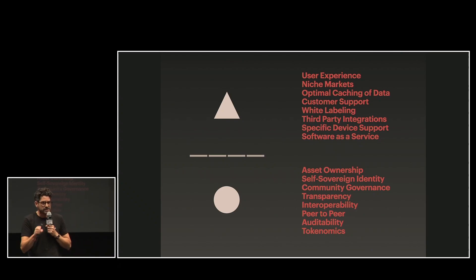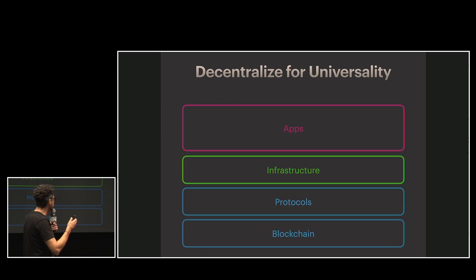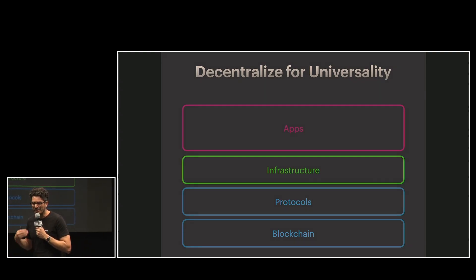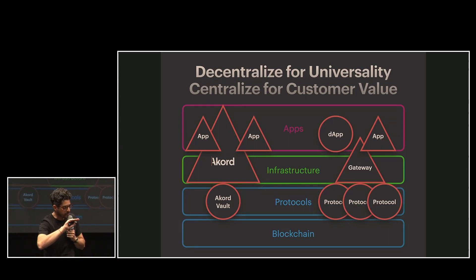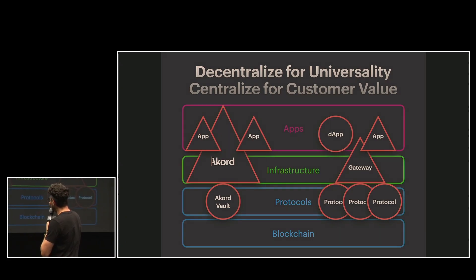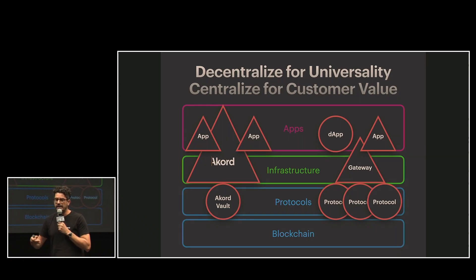We can get into more niche markets by providing more specific solutions. Looking at the stack many projects have presented, the lower layers — the blockchain layer, the protocol layer, and some of the infrastructure layer — can all be completely decentralized. But knowing decentralization alone won't solve our customer's problem, we can look at how centralization can provide customer value. Accord is positioned with our own protocol at the protocol layer, and then we centralize on top of the infrastructure and apps. We're working to bring gateways using AR.IO gateway technology, focusing on providing the data our customers want, and allowing customers to build apps on top of that infrastructure — believing that by centralizing that, we can provide that high-level user experience.